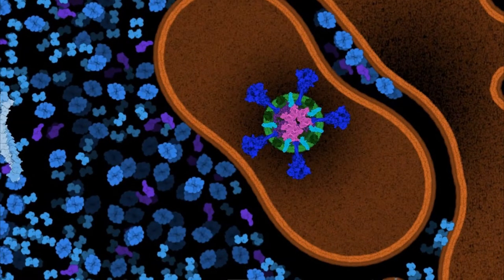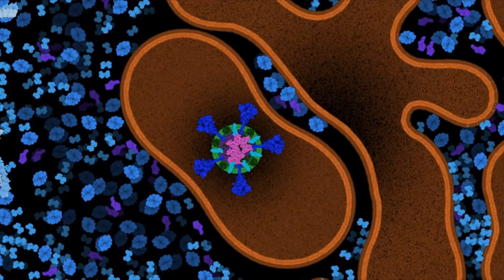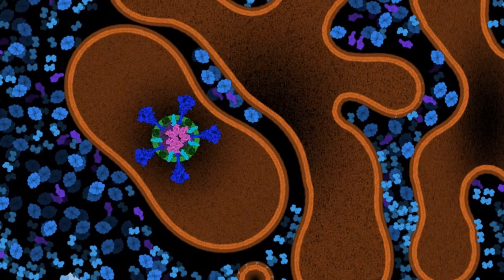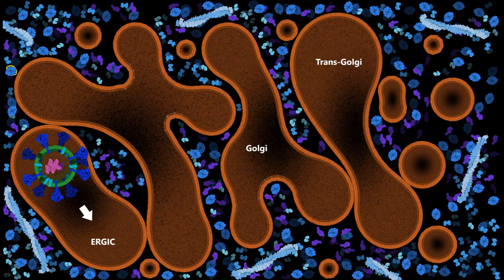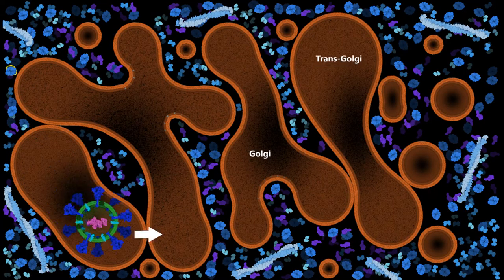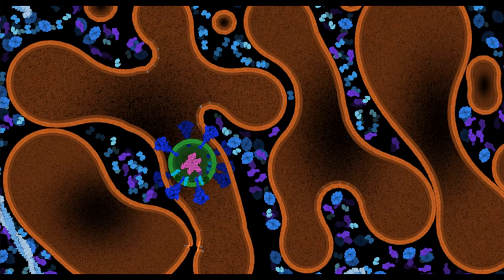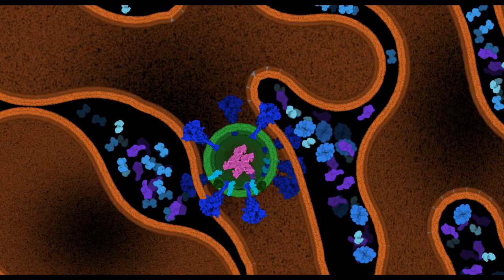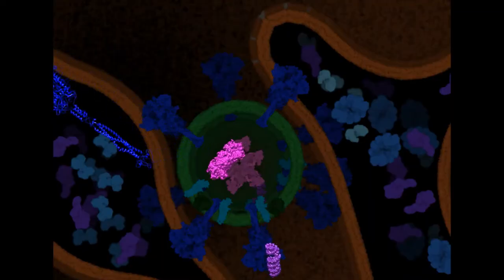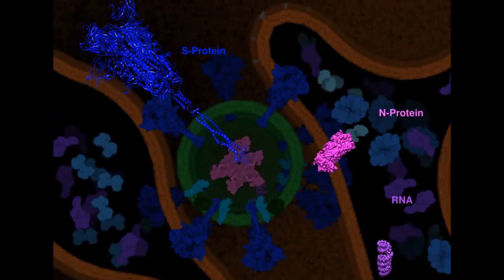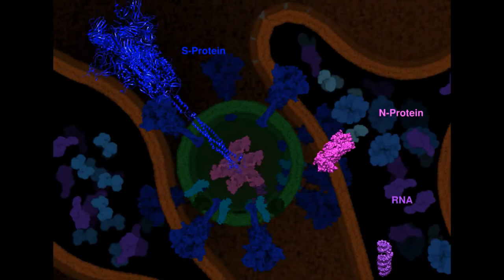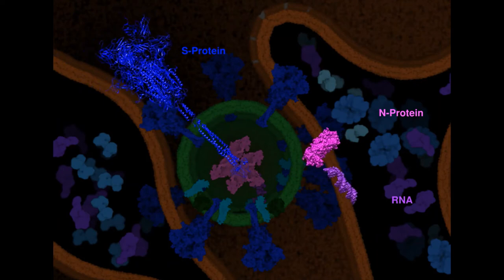The final product of the budding process is a fully formed virion containing an envelope with all membrane envelope proteins as well as internal RNA-N protein complexes. These fully formed virions will move through the Golgi and will mature whilst within. Inside the viral particle, the N proteins form the nucleocapsid encasing the RNA for more protection.